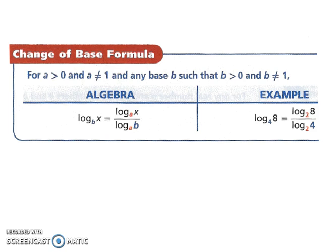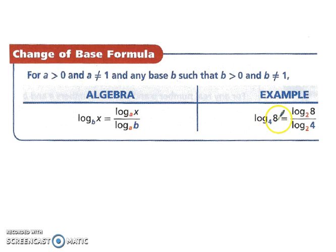Let's look at the change of base formula. When you have log base b of x, it equals log base a of x over log base a of b. For example, log base 4 of 8 is the same as log base 2 of 8 divided by log base 2 of 4.